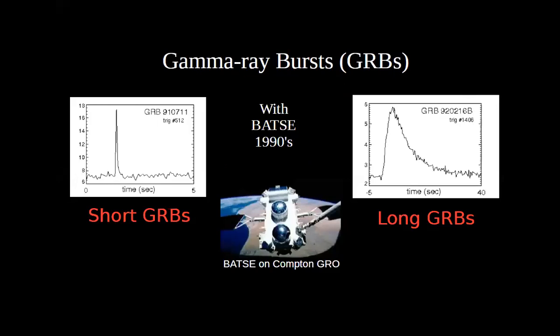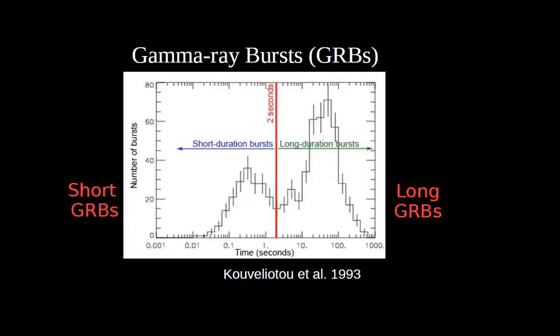Many GRBs were detected from BATSE. An important result was that all these gamma ray bursts were coming from all directions of the sky — not from the galactic plane or nearby galaxies — indicating they were cosmological. With enough statistics, a bimodal duration distribution emerged: bursts clustering at less than two seconds, and long-duration bursts from two seconds up to a thousand seconds or more.